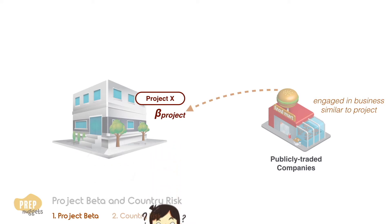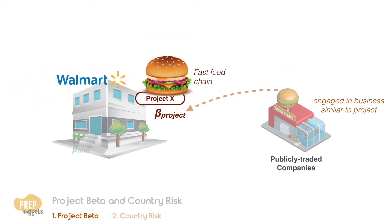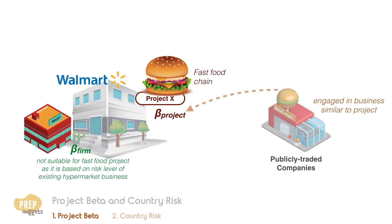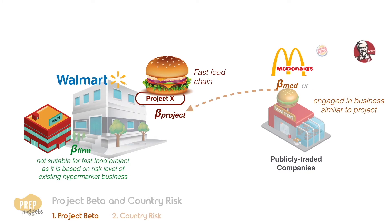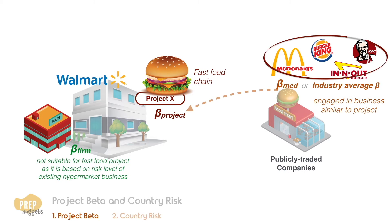For example, if Walmart is looking to set up a fast food chain, using the beta of its own stock to estimate the cost of equity for the new project may not be suitable, as it's based on the risk level of its current hypermarket business. Rather, McDonald's stock trade beta or the fast food industry average beta may be more appropriate. In order for the estimation to be meaningful, the comparable business must be purely engaged in the same business as the project under consideration.